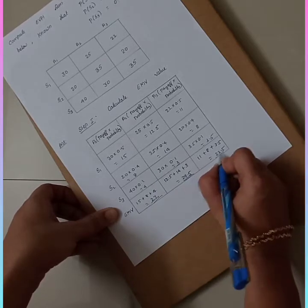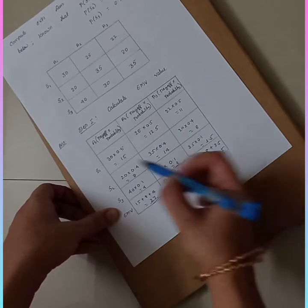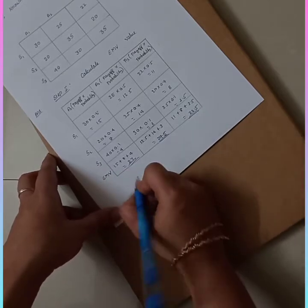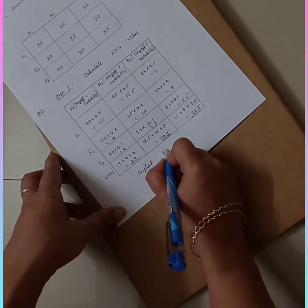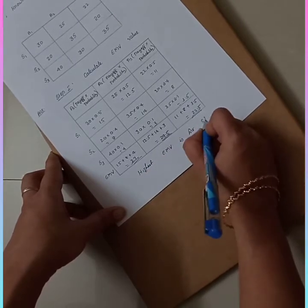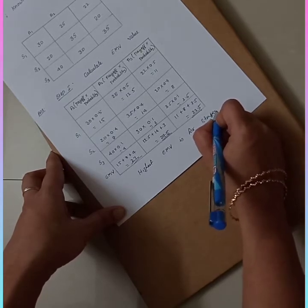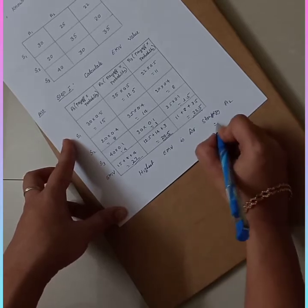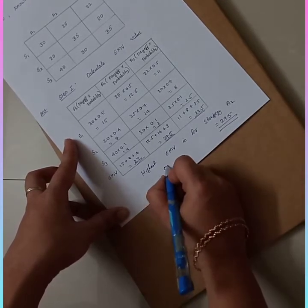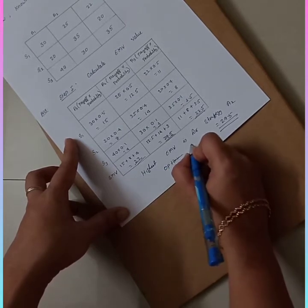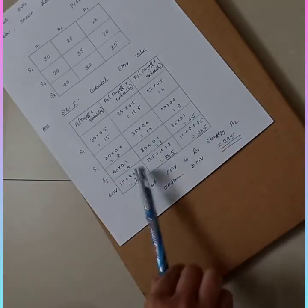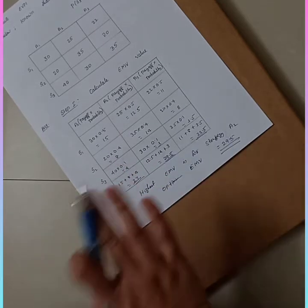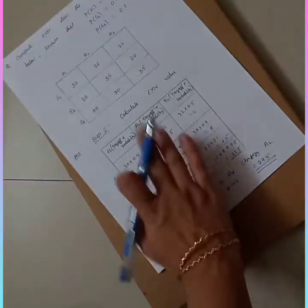So you have EMV values of 27, 29.5, and 22.5 for A1, A2, and A3 respectively. Now you need to select the highest EMV value. The highest EMV value is for strategy A2, which is 29.5. So the optimum EMV value is 29.5, corresponding to A2. This completes step one.